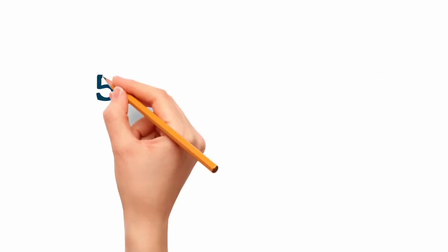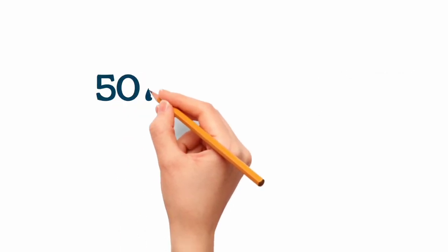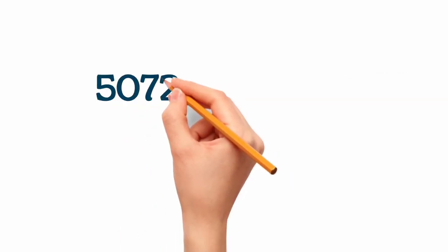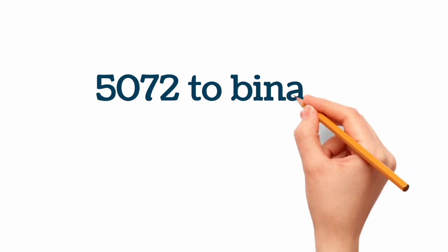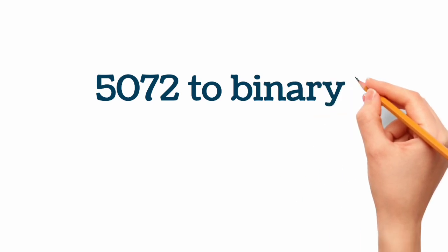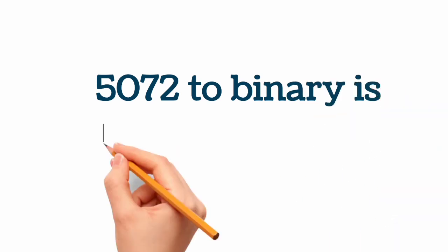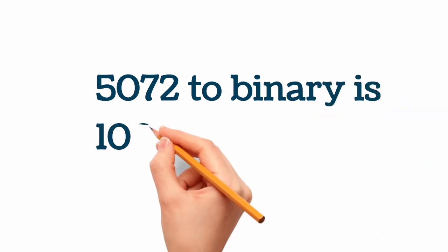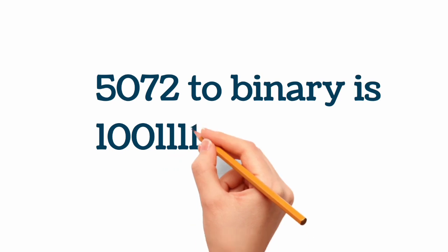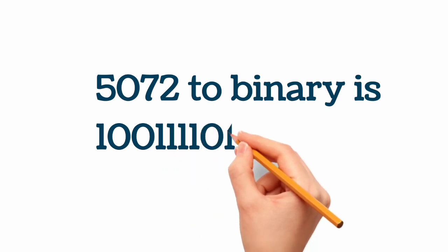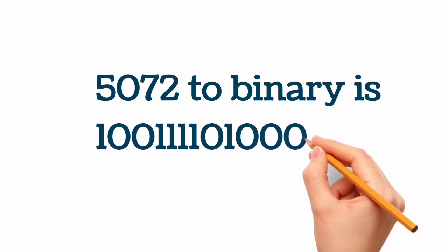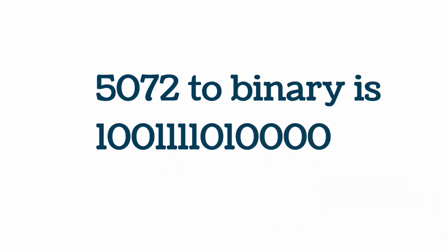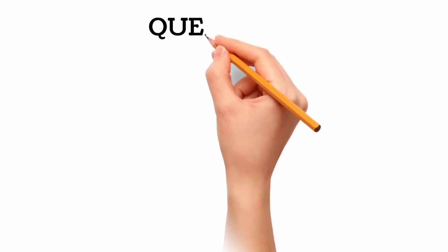Question 2c: 5072 base 10 to binary system. The binary result is 1001110010000. We get a long digit value here, so 5072 in binary is a multi-bit number.